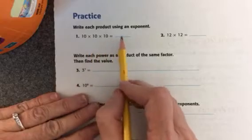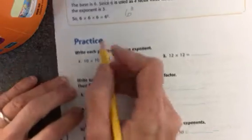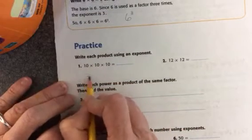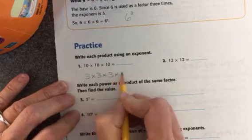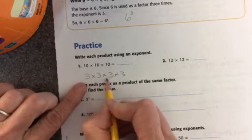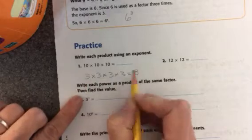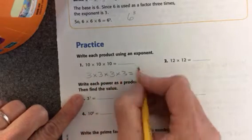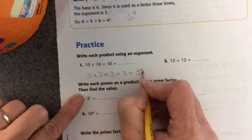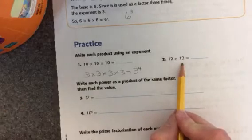So what you're going to do is practice writing the product as an exponent. So if I had 3 times 3 times 3 times 3, I'm using three as my number, so that will be my base, and then I count how many times I use it: one, two, three, four, and put four as my exponent. So you'll do the same thing on this one with the tens and this one with twelves.